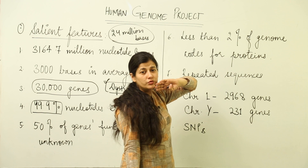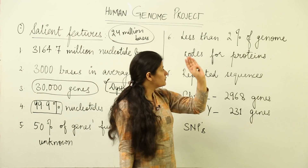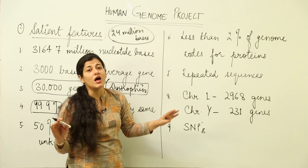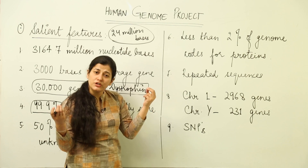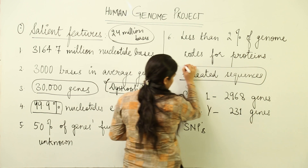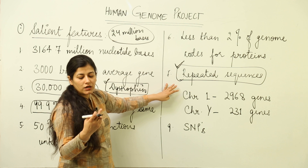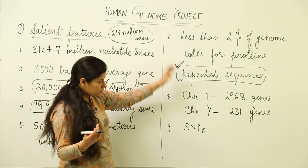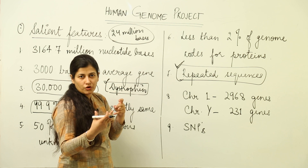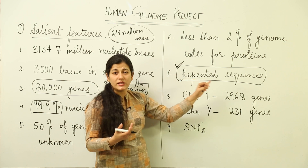Less than 2% of the entire genome codes for proteins. Out of the 3 billion base pairs, only 2% are protein-coding; the rest are present without a clearly understood function. However, the Human Genome Project revealed that the non-coding portion contains repeated sequences. These repeated sequences don't directly affect gene expression, but they do shed light on chromosomal history and the evolutionary history of the human race.